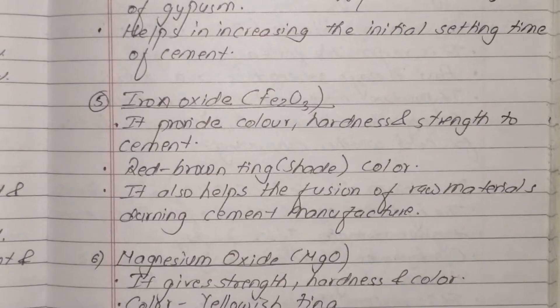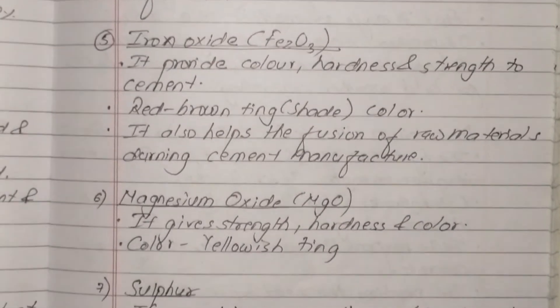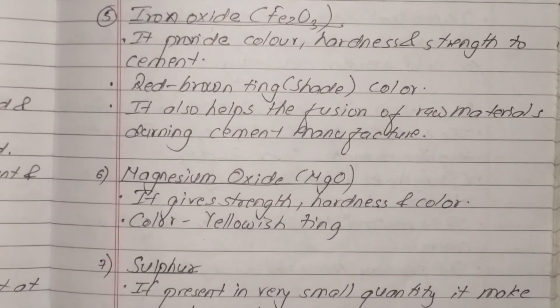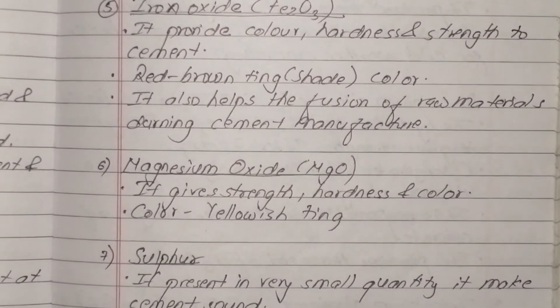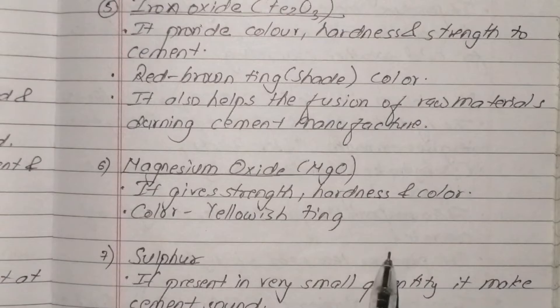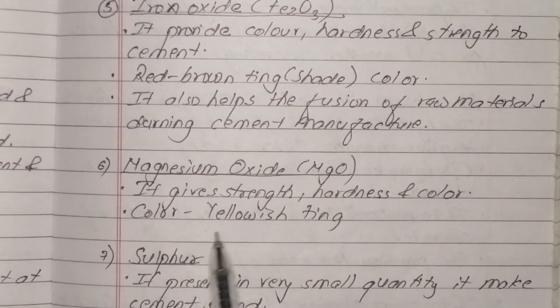Magnesium oxide, MgO, gives strength, hardness, and color to the cement. The color is described as an olive/sting color.